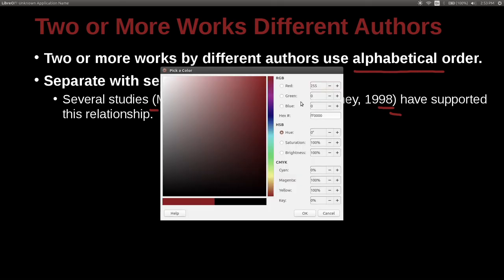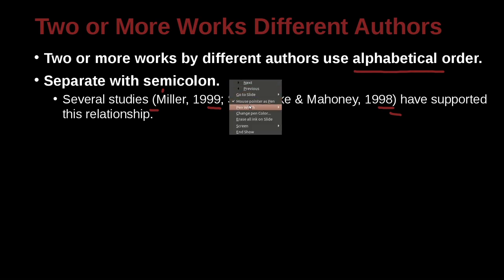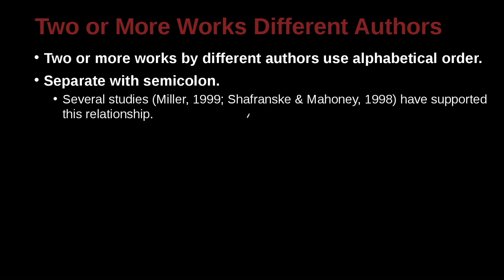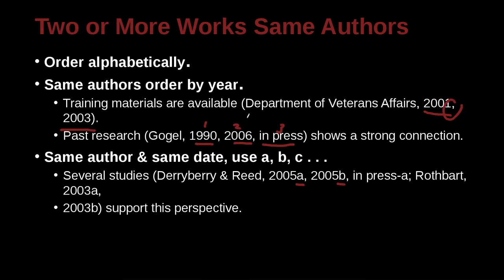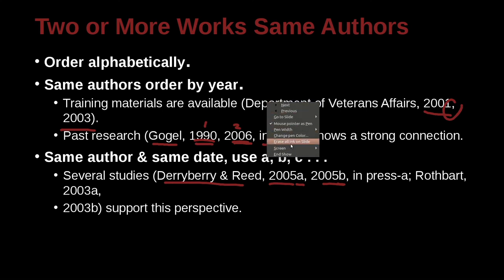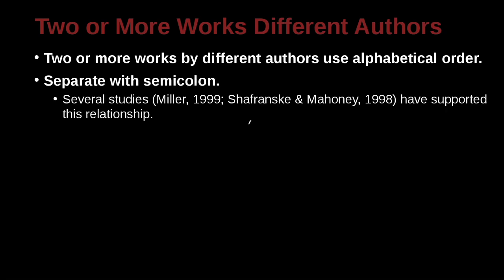It's easy to get confused, so let me clarify. The case we just discussed — one author with multiple papers from different years — is quite different from the case of different authors. One author, multiple papers from different years: order by date. Different authors: order alphabetically. Keep that in mind.